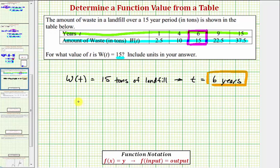We also know that w of six equals 15, which would correspond to the ordered pair, where we have the input comma the output, which would be the ordered pair six comma 15. Again, this tells us that after six years, there would be 15 tons of landfill.